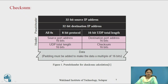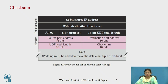The pseudo header consists of the 32-bit source IP address, 32-bit destination IP address, 8-bit protocol, and 16-bit UDP total length. The pink portion indicates the UDP header which contains source port address, destination port address, UDP total length, and checksum. The remaining portion is data.